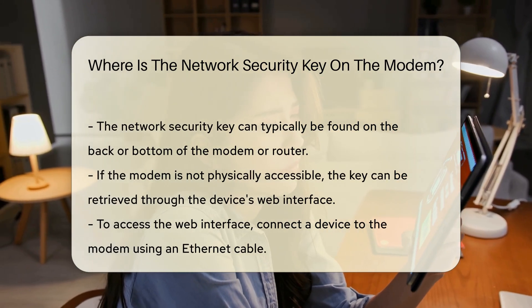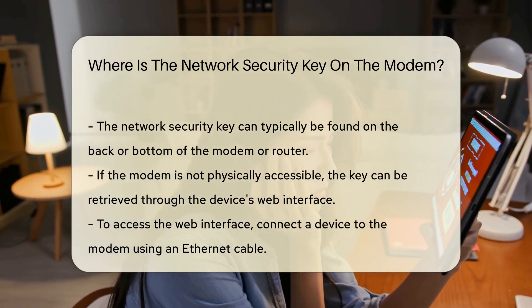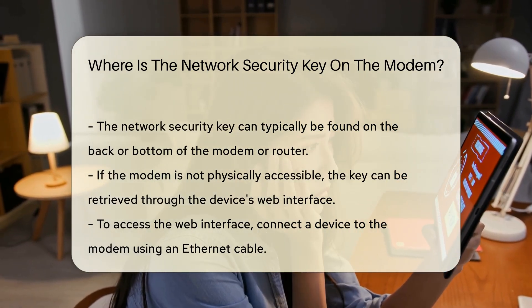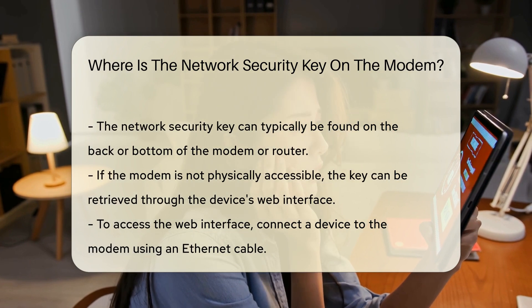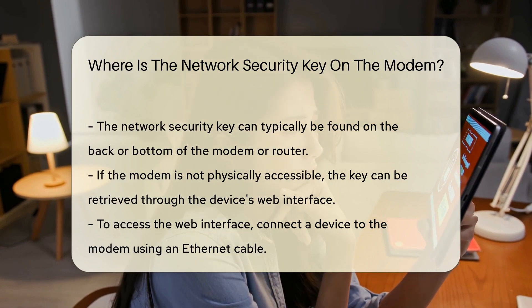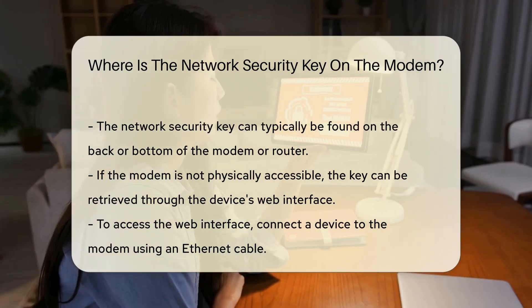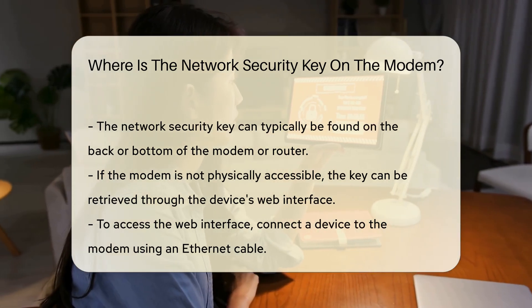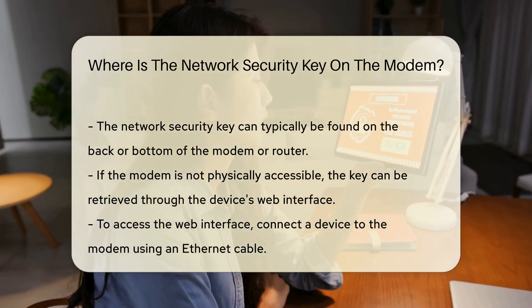If the modem is not accessible, you can also find the network security key through the device's web interface. To do this, connect a device to the modem using an Ethernet cable. Open a web browser and enter the modem's IP address into the address bar.